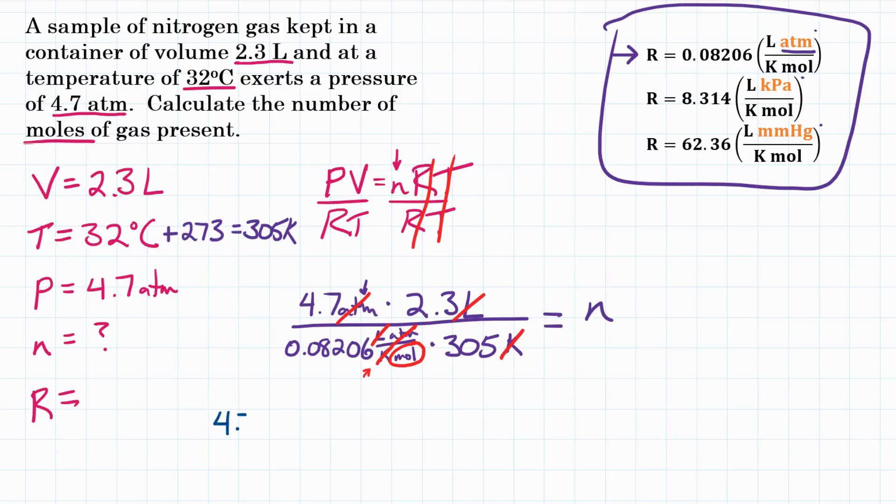4.7 times 2.3 divided by everything that's on the bottom. So let's open parentheses 0.08206, and that's multiplied by 305. Close parentheses. And we hit equals. We get around 0.4319. Let's round that to 0.43.